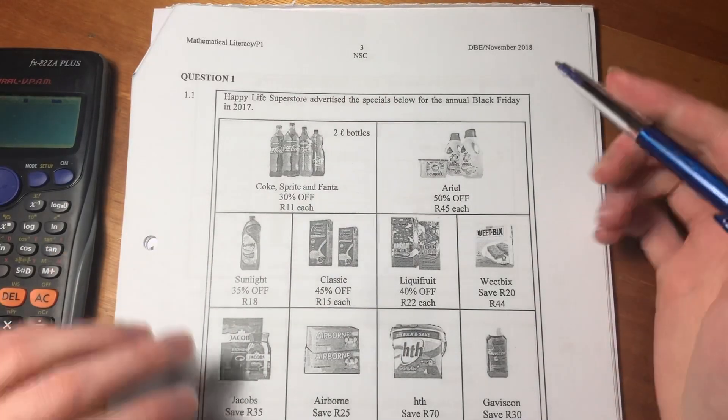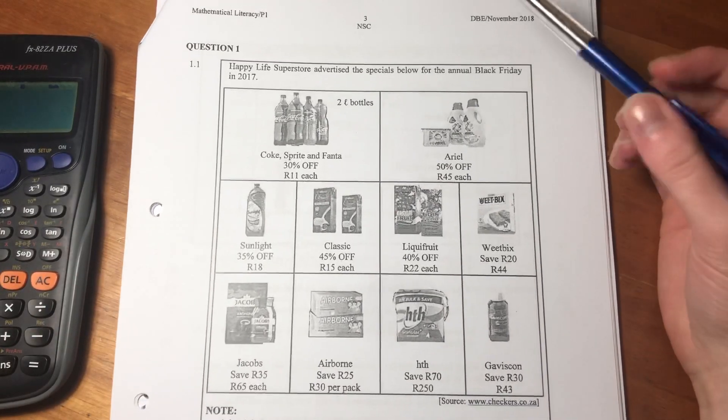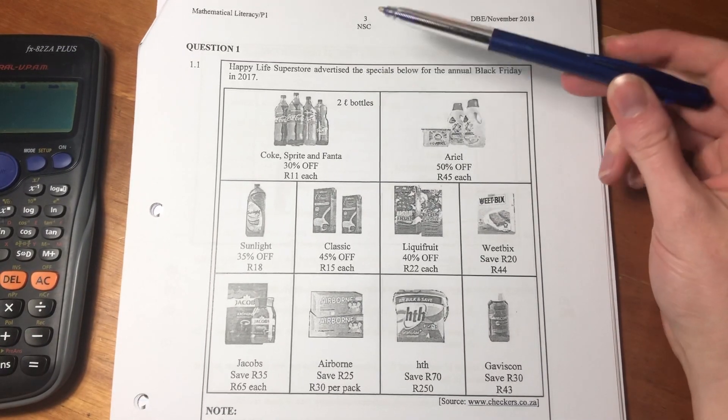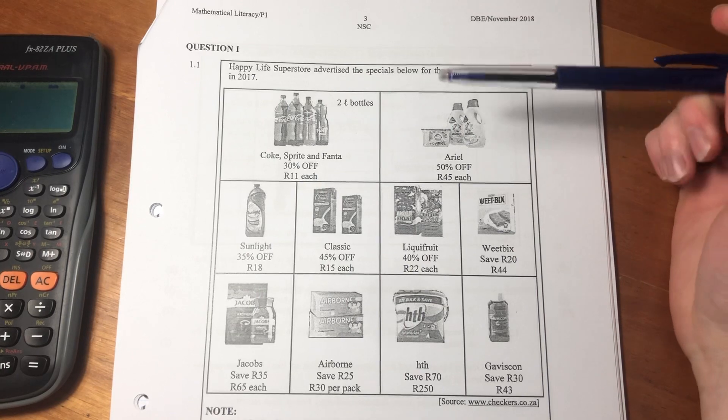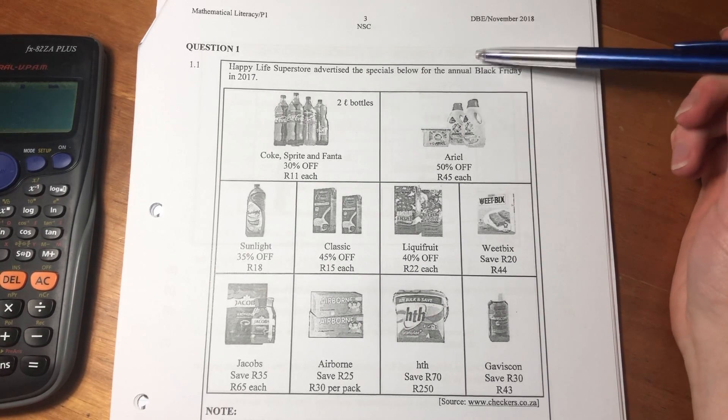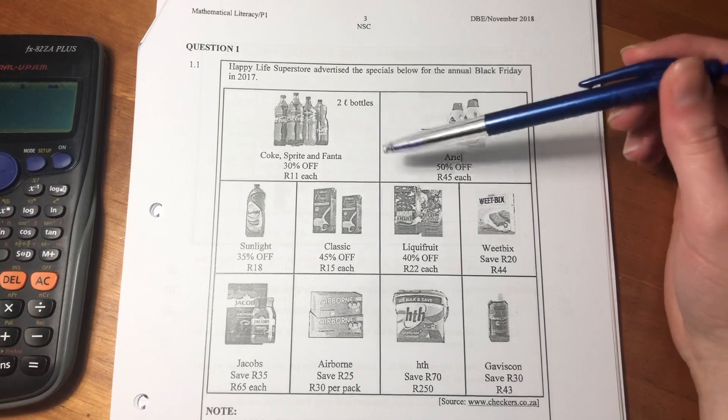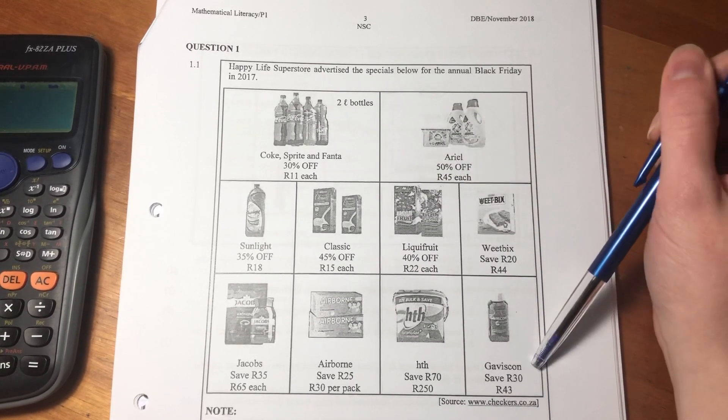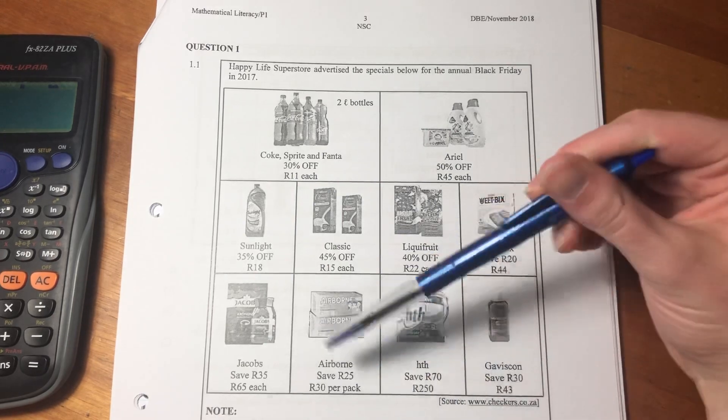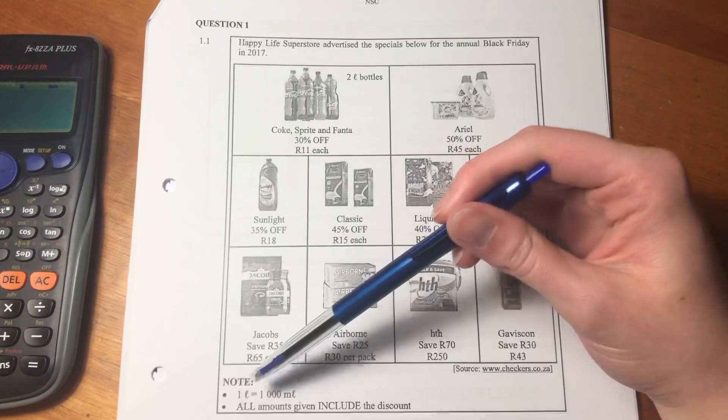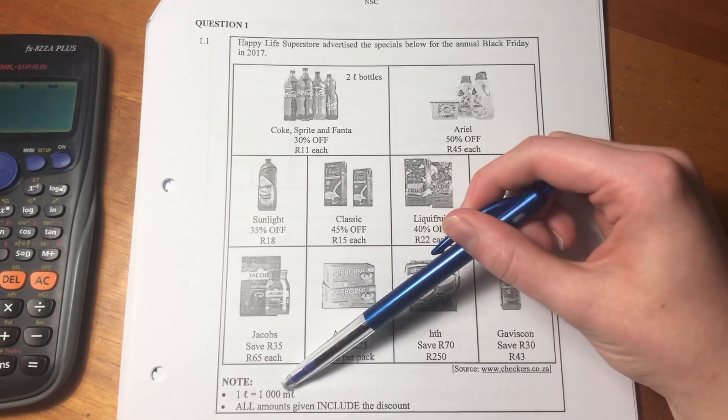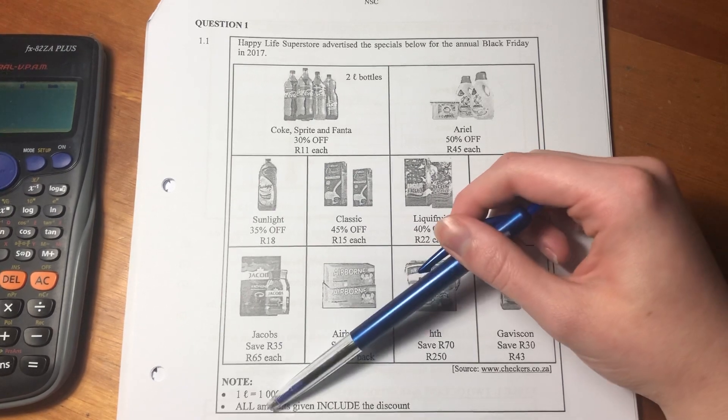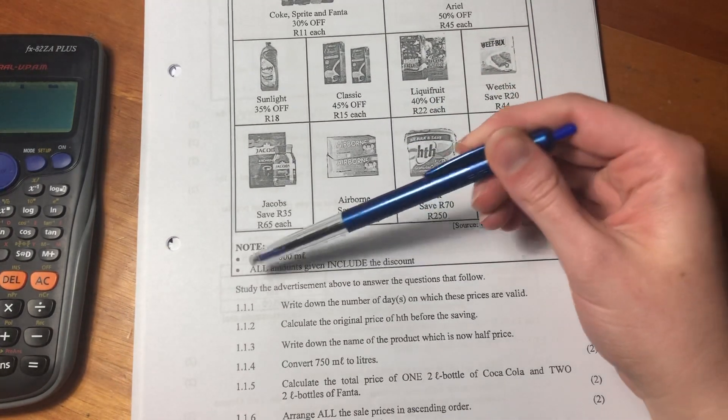So let's jump into this question. It says Happy Life Superstore advertised the specials below for the annual Black Friday in 2017. It's basically all these things. I don't think it's super important that you look at all of them because the questions will steer us.